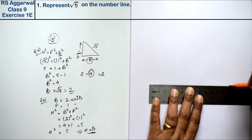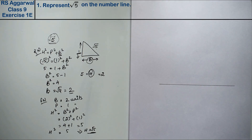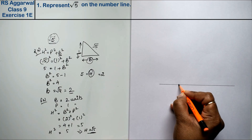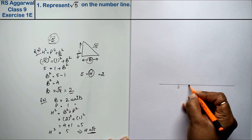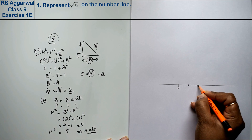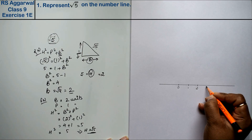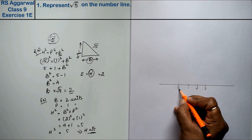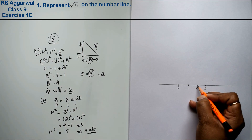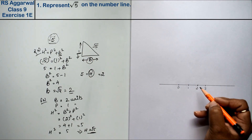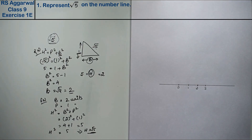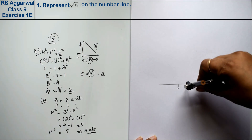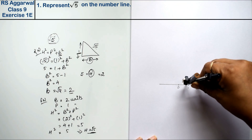First, draw a line for the number line and mark points 0, 1, and 2. We have made the base 2 units, so our base extends from 0 to 2. We know that Pythagoras requires a 90-degree angle, so we will construct a 90-degree angle at point 2 on the number line, as we learned in class 8.